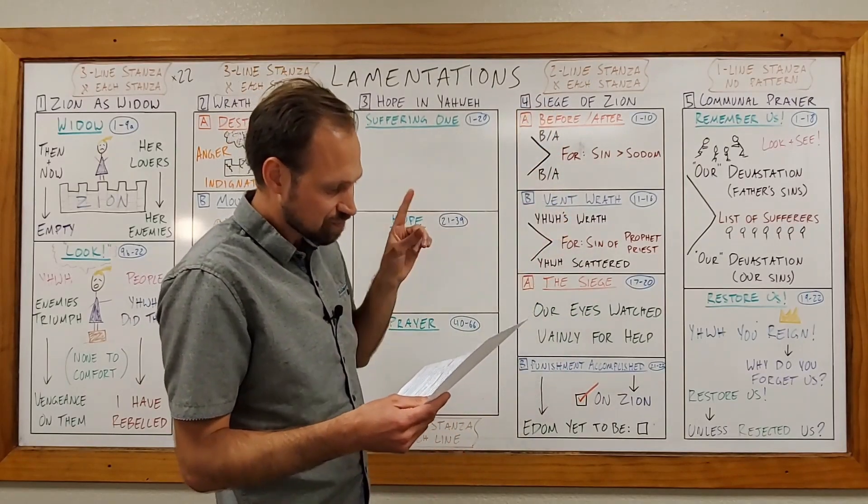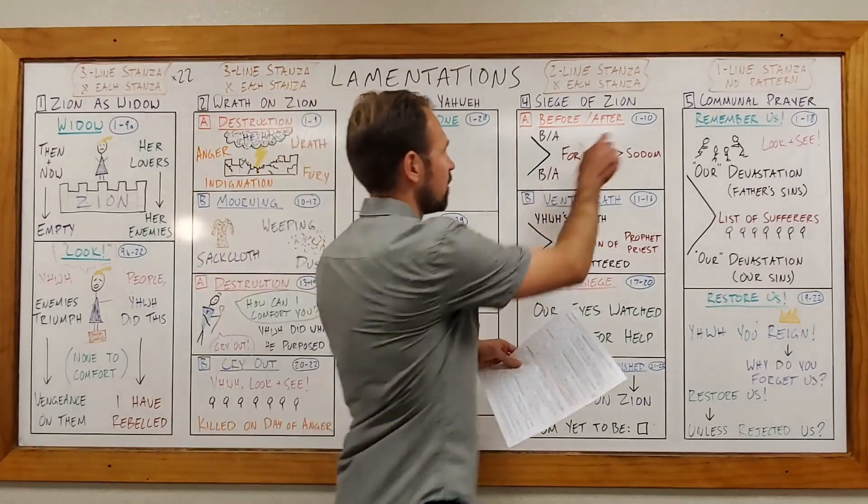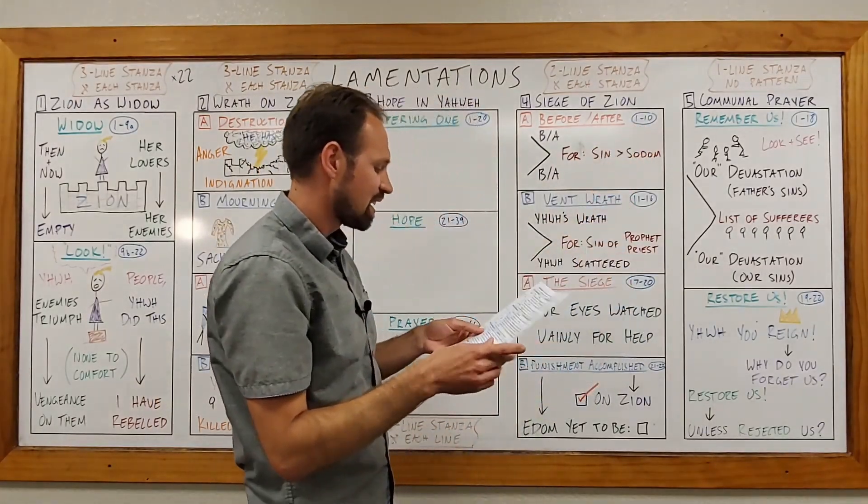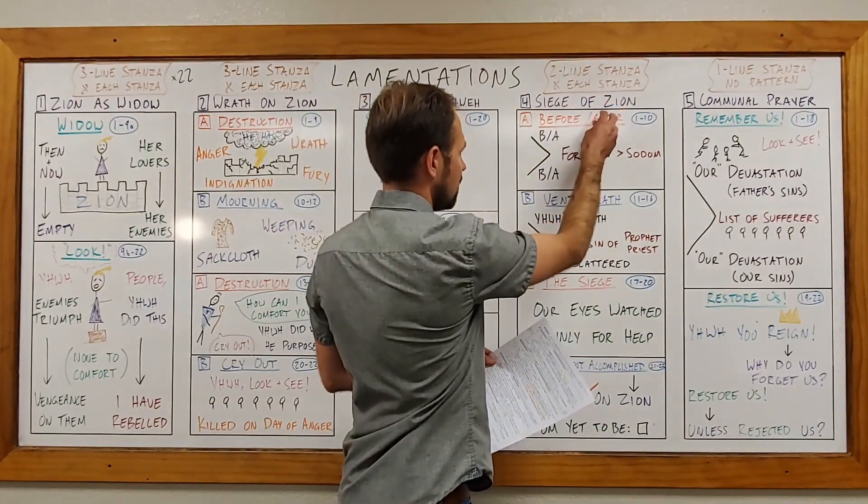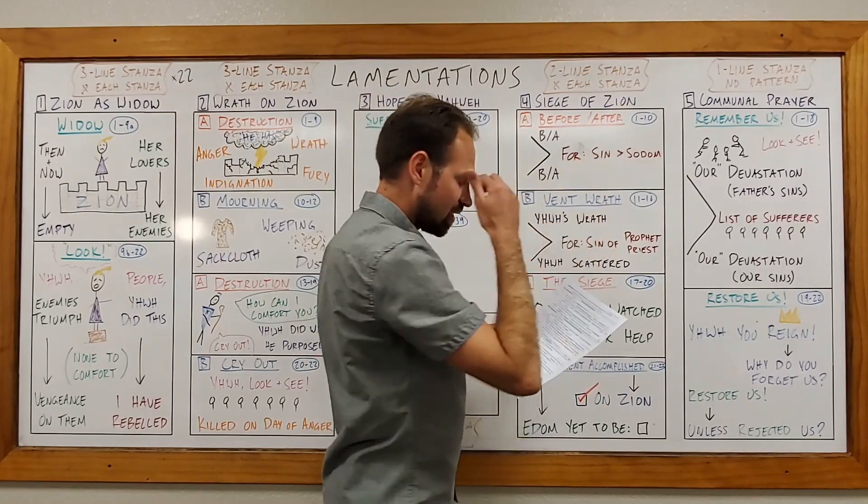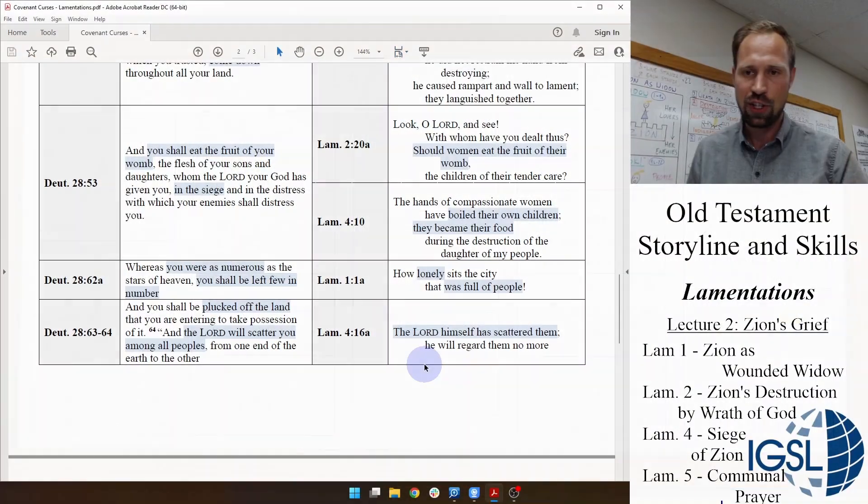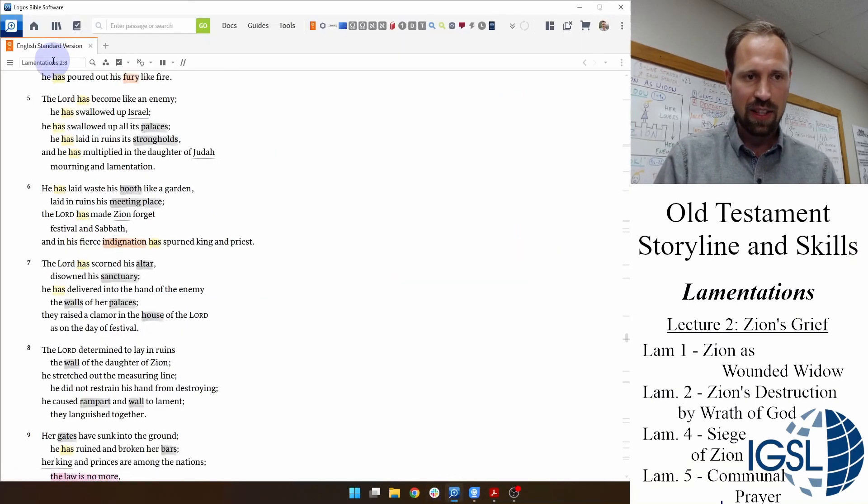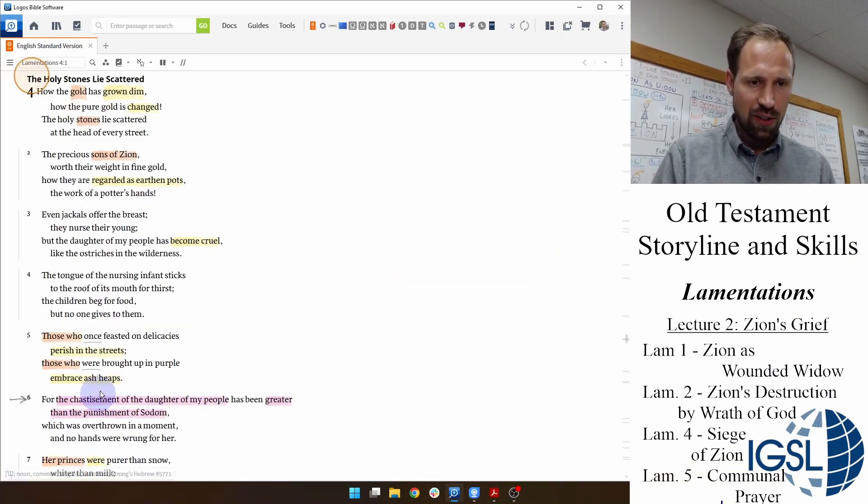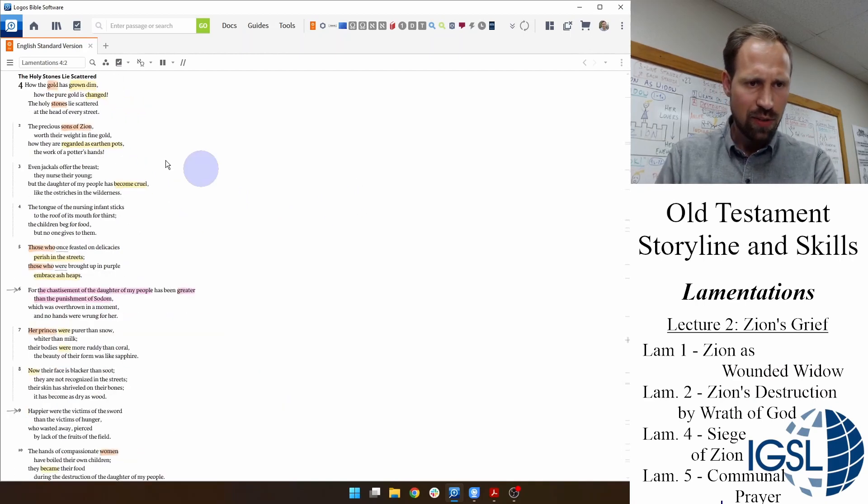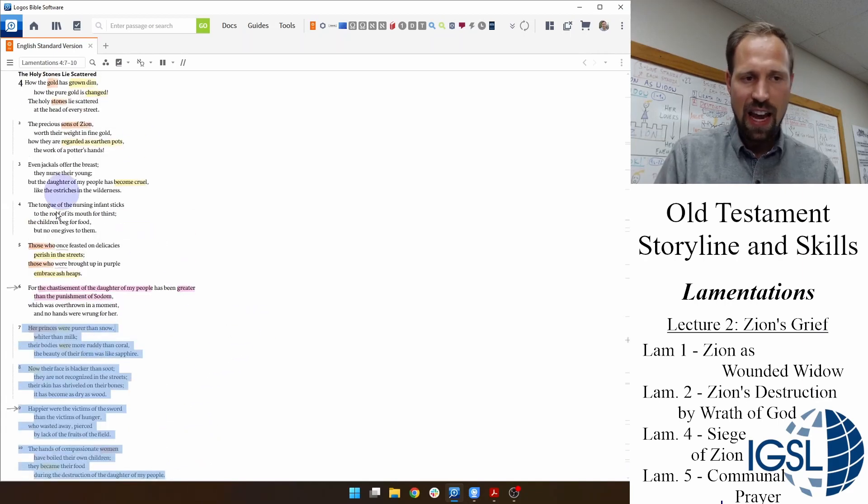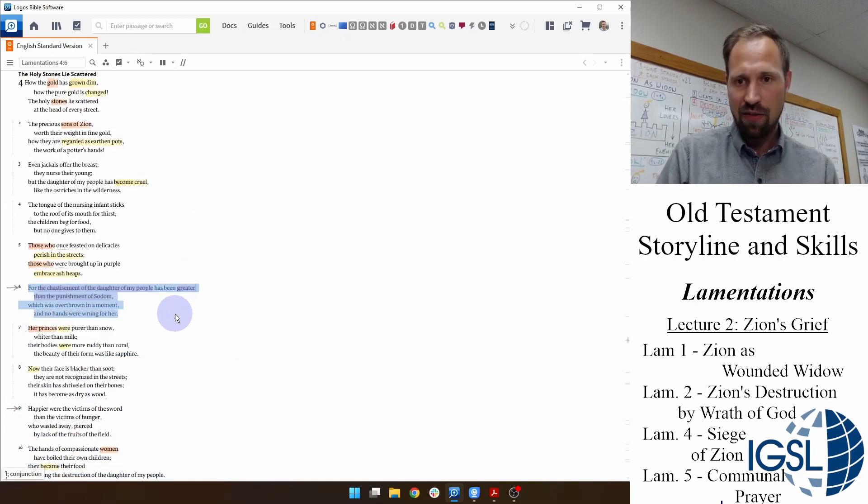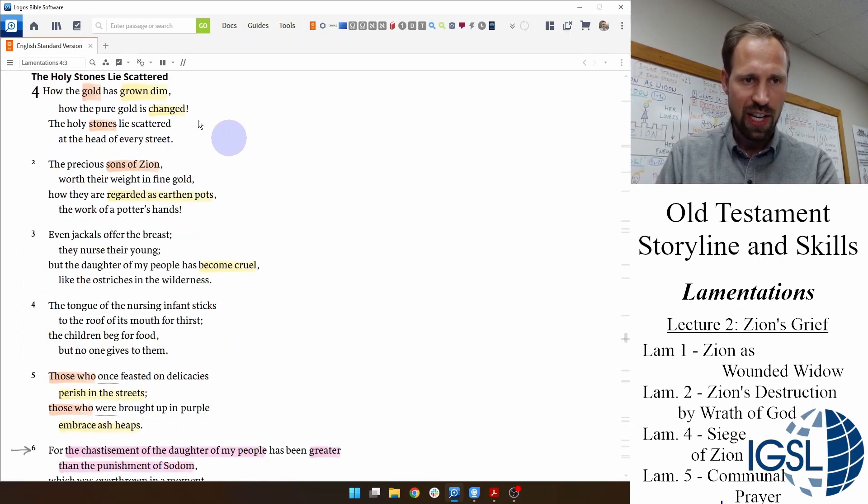And we're going to turn our attention now to chapter 4 and look at a couple of chiasms in its opening verses. Now, the first one here in 4:1 to 10 is going to present a contrast between life before the siege and life after the siege or during the siege. Let's look at that. I'm going to jump over to chapter 4 and see this chiasm that the poet presents us with.